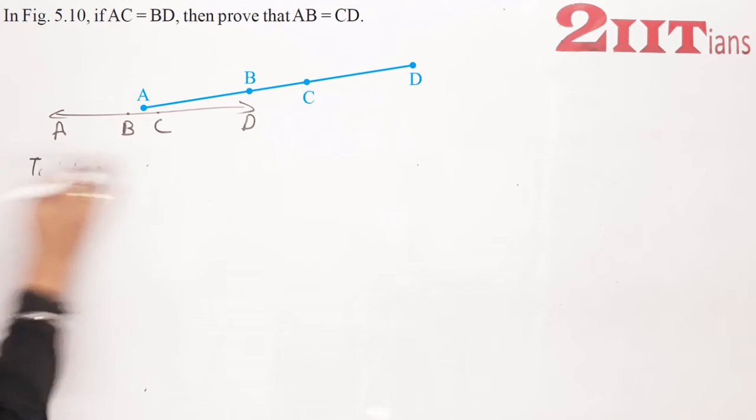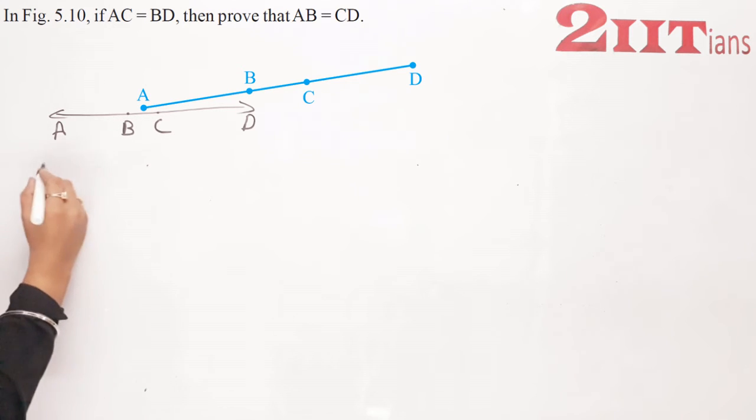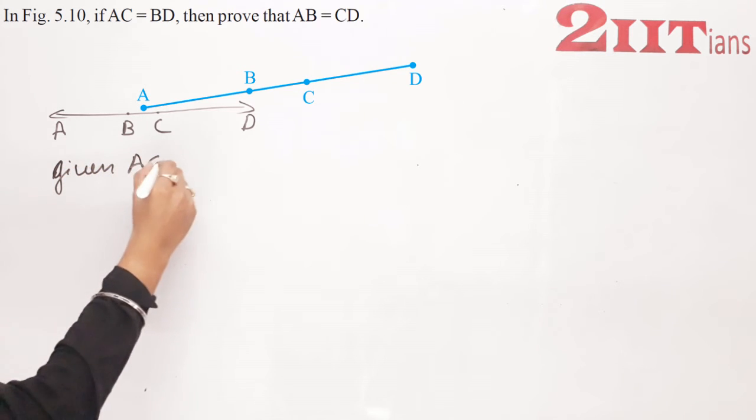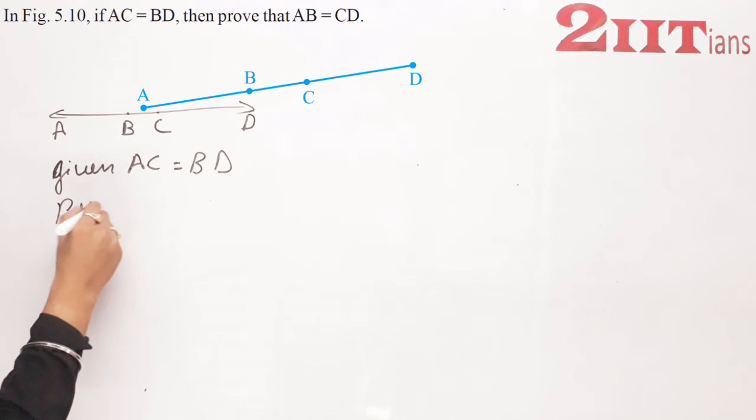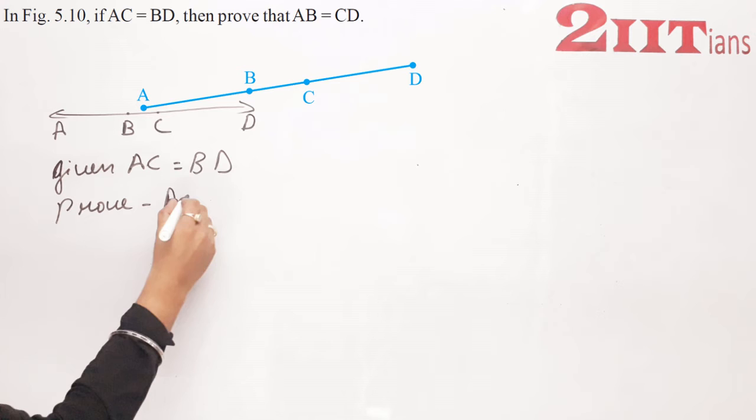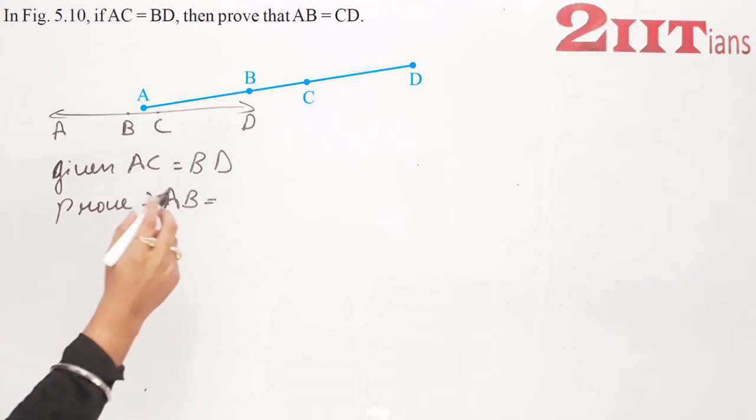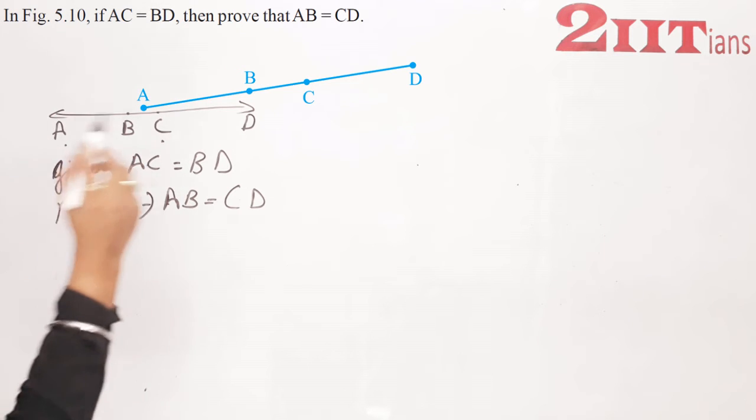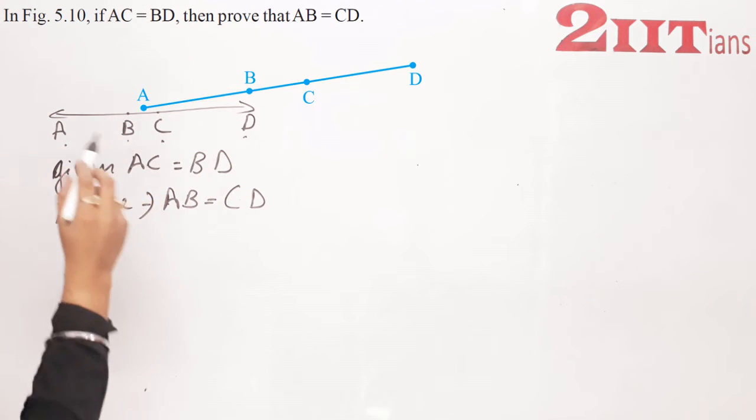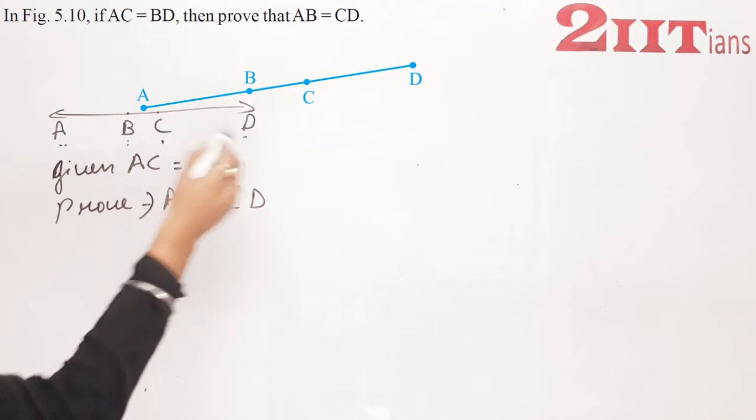Given AC equals to BD. Prove करना है हम लोगों को AB equals to CD. AC, BD के बराबर है, तो AB, CD के बराबर proof करना है. आइए देखते हैं.